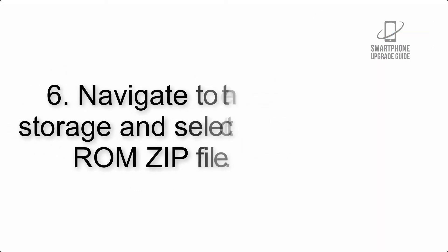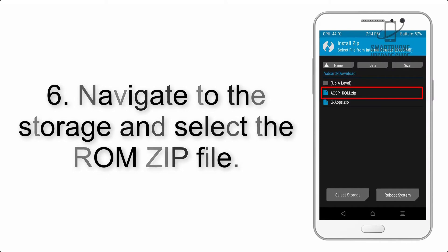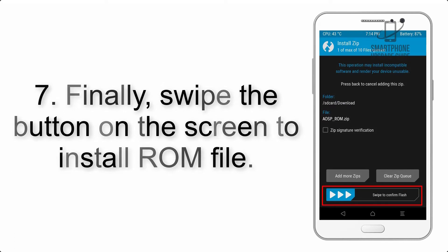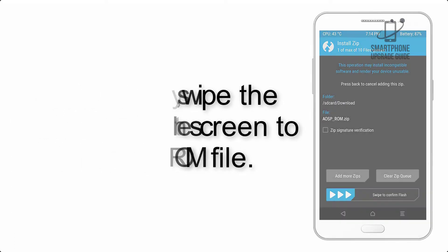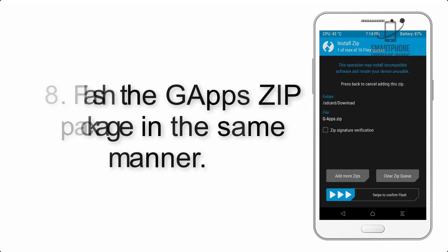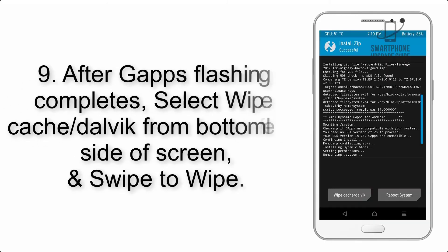Step 6: Navigate to the storage and select the ROM zip file. Step 7: Finally, swipe the button on the screen to install the ROM file. Step 8: Flash the gapps zip package in the same manner.